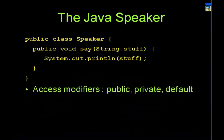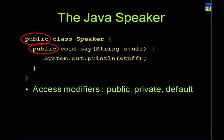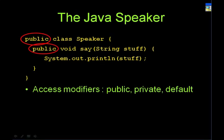The first thing you'll notice is this 'public' modifier — there's 'public class Speaker' and 'public void say'. This is what you call an access modifier. An access modifier modifies how you will use the method or access the class. There are three kinds: public, private, and default. In this simple example, the method 'say' is public, meaning anybody can call this method.